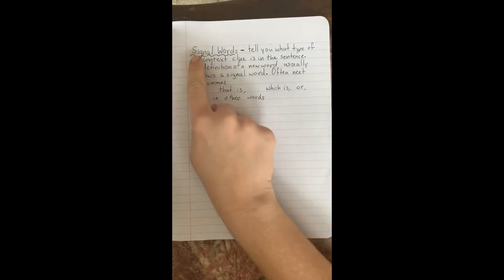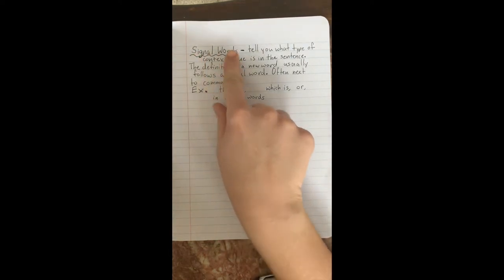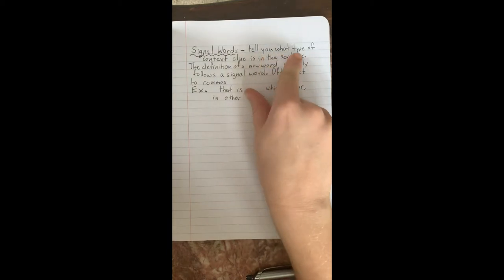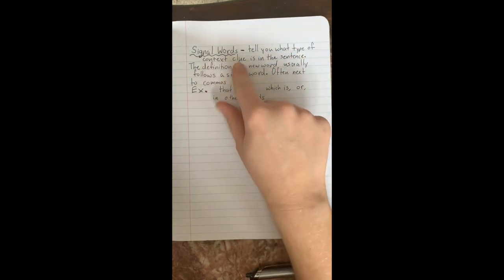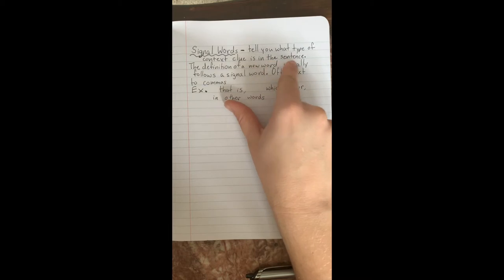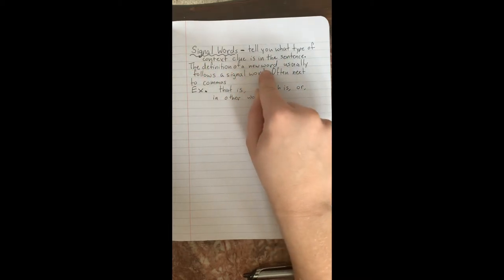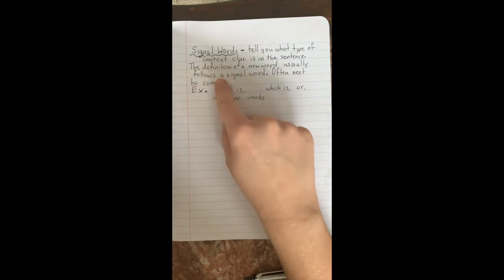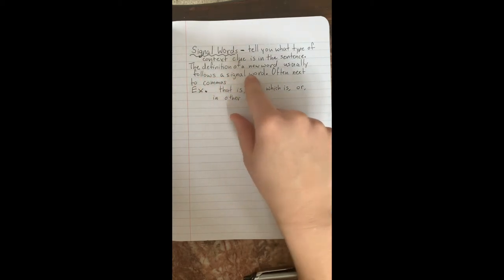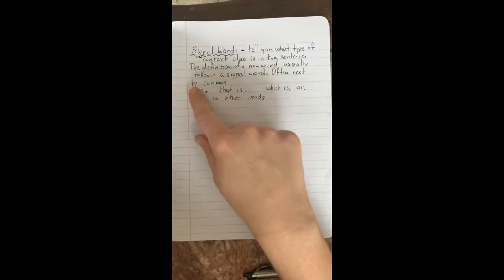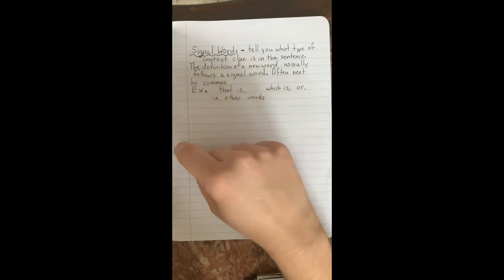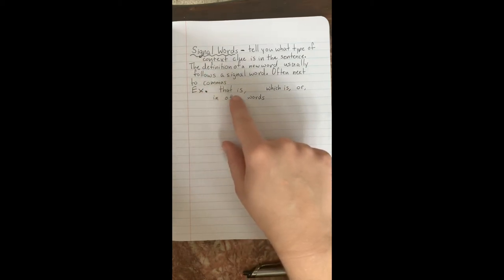So yesterday we talked about signal words. They tell you what type of context clue is in the sentence. The definition of a new word usually follows a signal word. It's often next to commas and the examples we saw were that is, which is, or, and in other words.